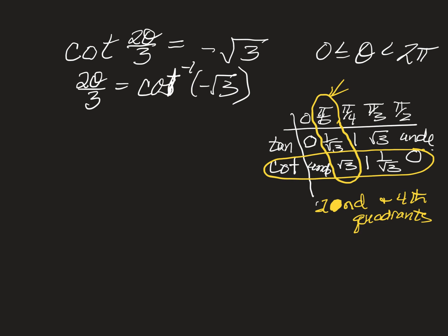So the second and fourth quadrants are where cotangent is negative. That means we need the reference angle to be π/6 in the second and fourth quadrants. That would be 5π/6, and if you think about the quadrant with this π/6 reference angle, that other one would be 11π/6. The reference angle is π/6 from being a full revolution, or π/6 from being two full revolutions.